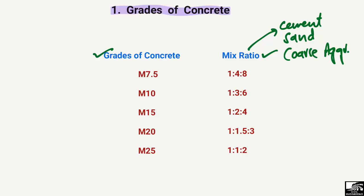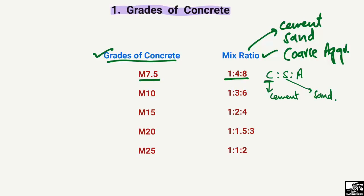If we look at the grades of concrete, we have several different grades starting from M7.5, which has a ratio of 1:4:8. The values C, S, and A are used to represent the mix ratio — C represents the cement content, S represents the sand, and A represents the coarse aggregate. So M7.5 has a mix ratio of 1:4:8, where 1 is cement, 4 is sand, and 8 is coarse aggregate.